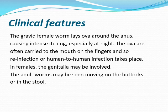The perineum and sometimes the genitalia may also be involved because it's nearby the anus, and adult worms may be seen moving on the buttocks or in the stool. Rarely, searching for these worms at night is sometimes difficult.